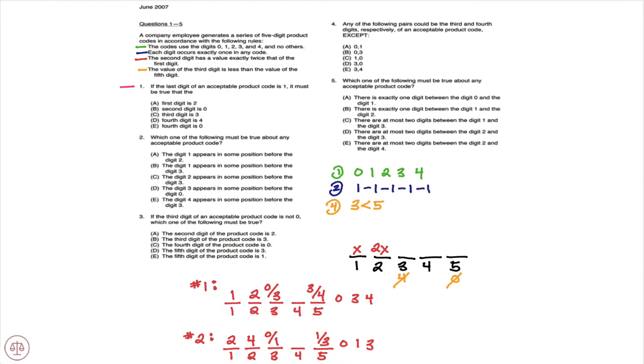All right, so let's draw out a hypothetical for question 1 here and what it says is that the last digit of an acceptable product code is 1.